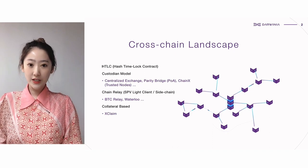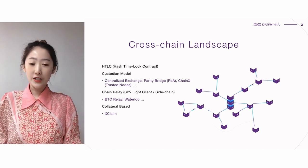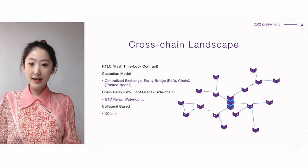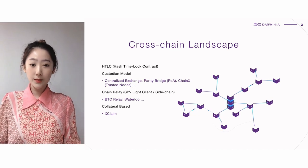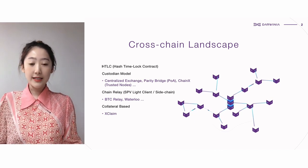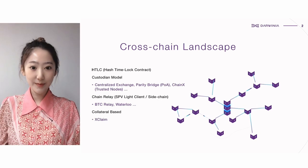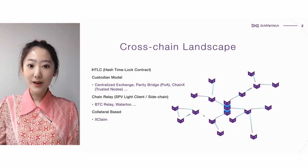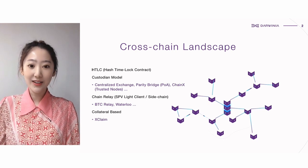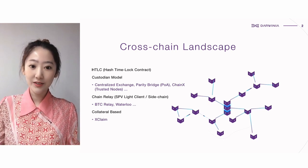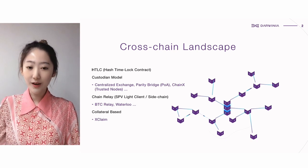Now, the mostly used bridge is a custodian model, but it varies in centralization level. No one yet has come to a trustless level. Therefore, trust is greatly needed in this model and it is exposed to centralization risks. A collateral-based cross-chain protocol is relatively new, but participation requires some deposit, so it highly relies on price feeds and the collateral value may fluctuate.